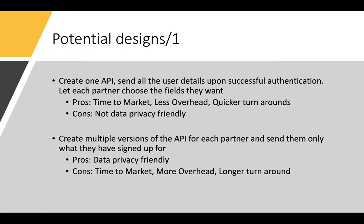The second approach: create multiple versions of the same API for each partner, and send them only what they have signed up for. This is a very good approach because even if I have 100 attributes and one partner needs five, I only send them five - giving full control over what I share with each vendor. The biggest problem with this approach is time to market: if your business follows agile practices and onboards new vendors very frequently, this becomes time consuming because with every new partner you have to create a new API version and map the required fields.